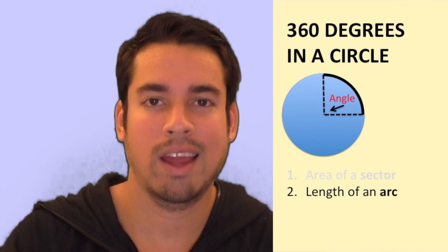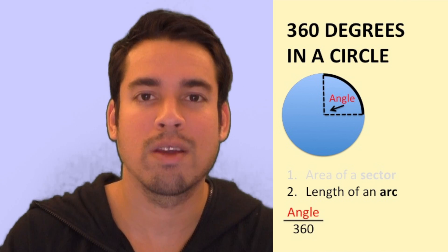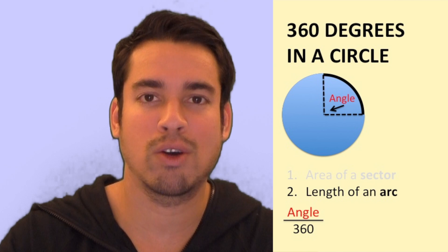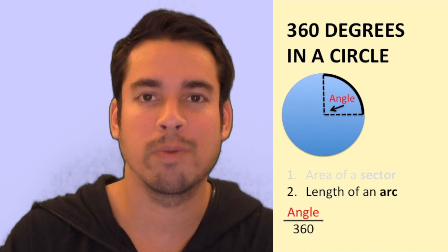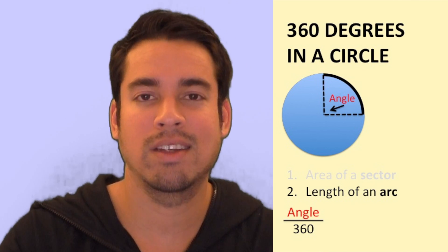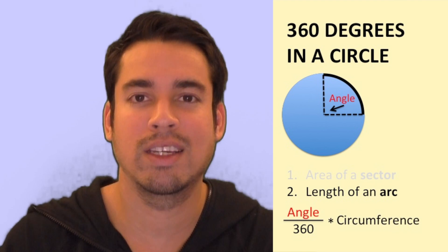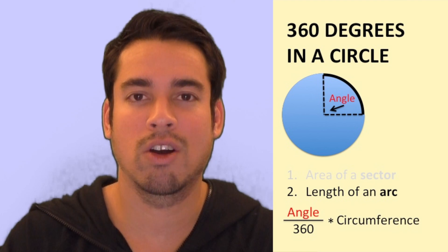Now you take that angle and you divide it by 360. So it's kind of like the part divided by the whole. So you're going to make a fraction or ratio and then you multiply that times the total circumference. And that gives you the length of this arc.